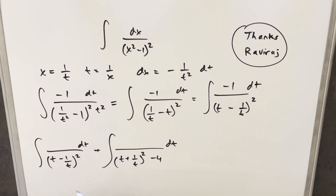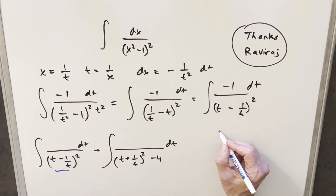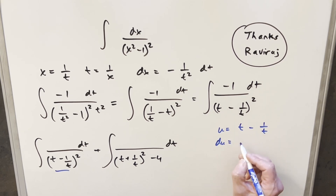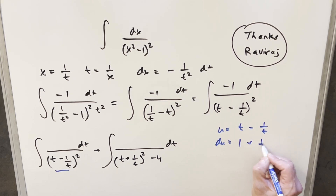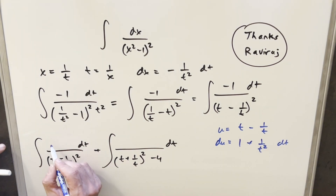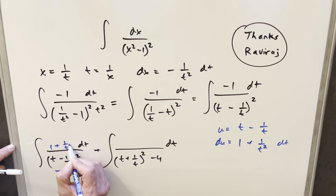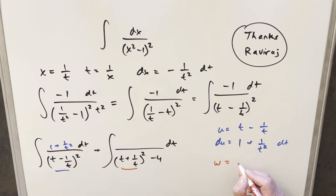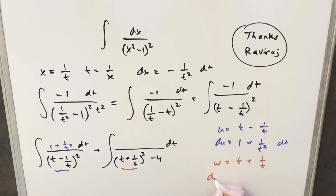I can set up two substitutions. For the first, I'll do a u substitution: u equals t minus 1/t, and the derivative gives du = (1 plus 1/t squared) dt — I'll make that the numerator. For the second integral, I'll use w equals t plus 1/t, and dw = (1 minus 1/t squared) dt, and I'll force that to be the numerator.